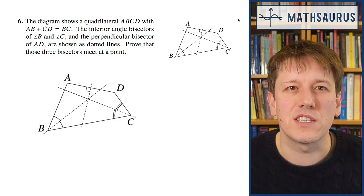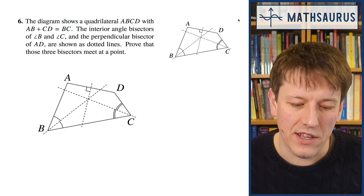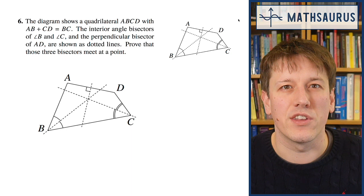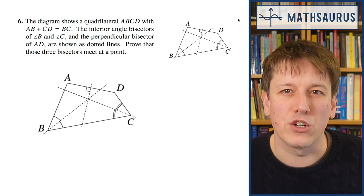We want to prove that these three bisectors meet at a point. Of course each pair of the bisectors are going to meet each other, but do they all meet at one single point?